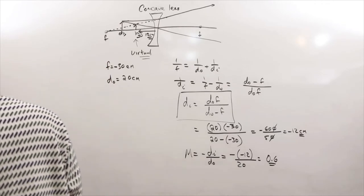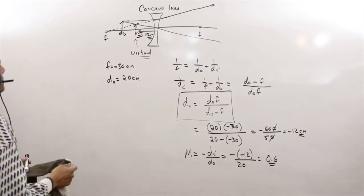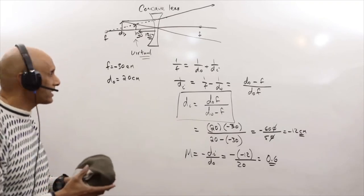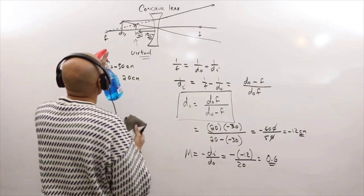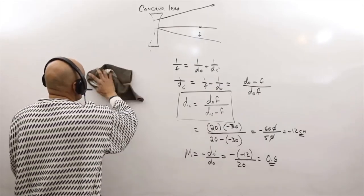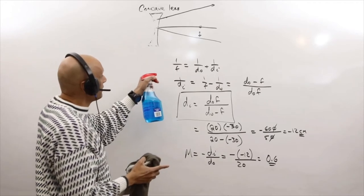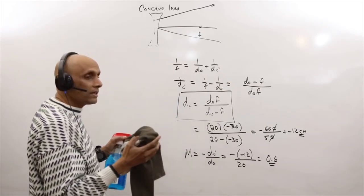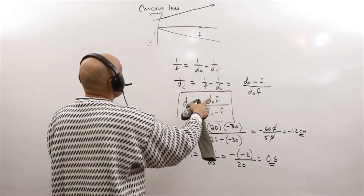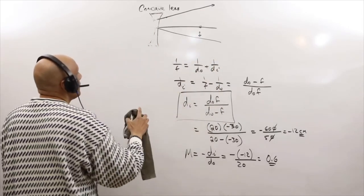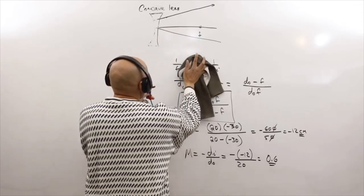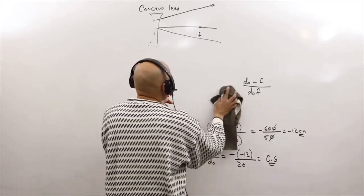I've done two cases each for concave and convex lenses; now we switch to mirrors — concave and convex. Remember: this beautiful thin lens equation comes from many different cases — the full derivation is in the course notes, but the key point is you just need to know how to apply the thin lens equation to concave/convex mirrors and lenses.